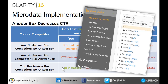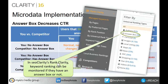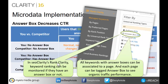Specifically in SEO Clarity, when you sign up and go to Rank Clarity to monitor your rankings, you can also see the different types of rich snippets that appear, including the answer box. You can track answer boxes within SEO Clarity. If you see a keyword appearing in an answer box, you can associate that keyword to the page that is ranking and then track the traffic of that page for its organic performance — that way you can see how much help the answer box is giving you.